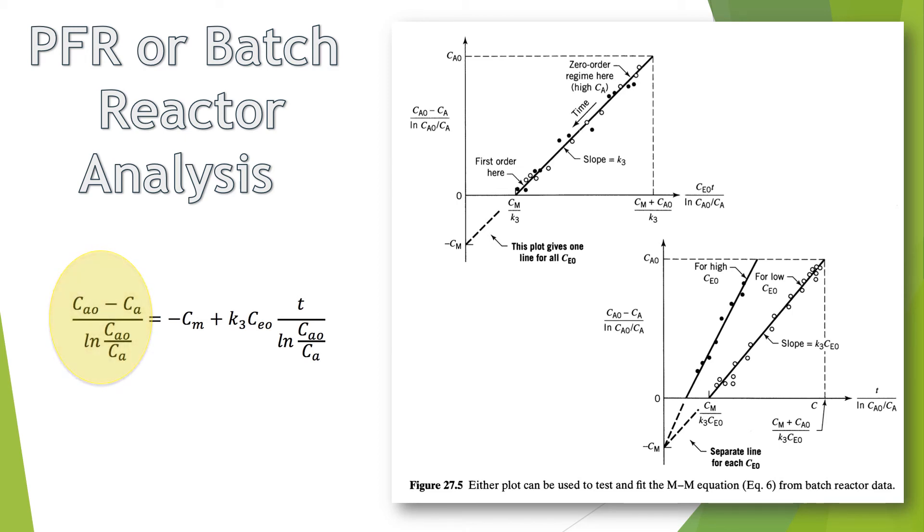The left-hand side is Y, the negative CM term is B, the product of the rate constant and the initial enzyme concentration is M, and the fraction on the right is X.